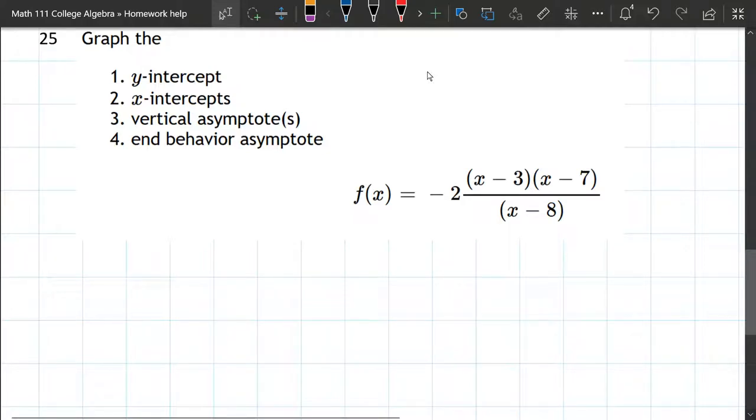So we're gonna graph this rational function. We're gonna graph these four parts right here and we'll graph them in the order they're given. These kind of go easiest to more difficult.